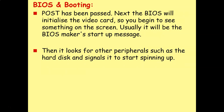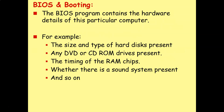Once POST has been passed, the BIOS will initialize the video card, so usually you'll see something on the screen — typically the BIOS maker's startup message. Then it looks for other peripherals such as the hard disk drive and signals it to start spinning and get ready. The BIOS program contains the hardware details for that particular computer, such as the size and type of any hard disk drives present, any optical drives, the timings of the RAM chips, and whether there is a sound system present.